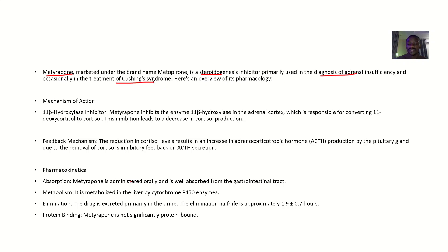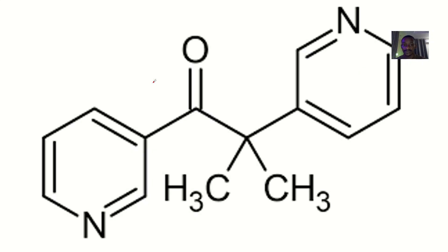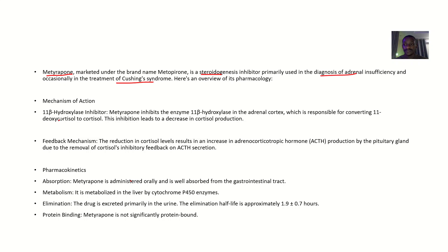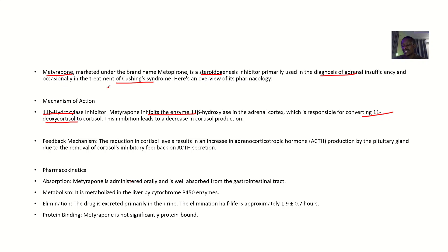Metyrapone is also used occasionally in the treatment of Cushing's syndrome. For the mechanism of action, it is an 11-hydroxylase inhibitor. Metyrapone inhibits the enzyme known as 11-beta hydroxylase in the adrenal cortex, which is responsible for converting 11-deoxycortisol to cortisol.